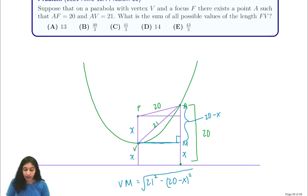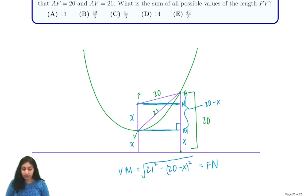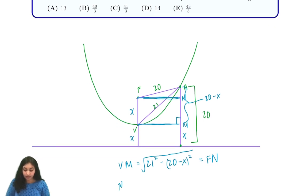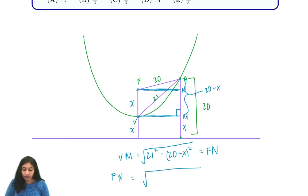We can also express VM. We know that it's also equal to this point, and we can let this be N. So this is also equal to FN. And we know that FN is equal to the square root of 20 squared minus 20 minus 2X squared, which is what this is. We subtracted off the X here and the X here.